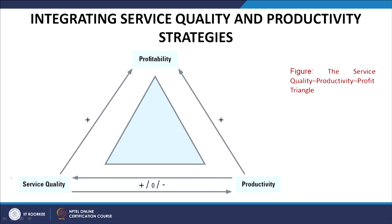Let us look at this triangle, which integrates service quality and productivity strategies. On the three vertices of this triangle there are three things: profitability, service quality and productivity. To give a brief overview, increased service quality increases profitability, and increased productivity also increases the profitability of the firm.